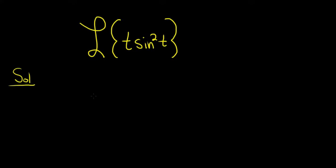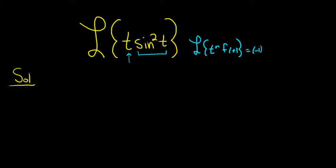Whenever you have a Laplace transform and there's a t being multiplied by something you can compute the Laplace of, there's a very useful formula. The Laplace of t to a power times f(t) is equal to negative 1 to that power — negative 1 to the n — times the nth derivative of big F with respect to s, evaluated at s. Big F here is the Laplace of little f.